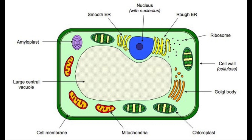First, the plant cell contains chloroplasts. A chloroplast contains green chlorophyll, which absorbs sunlight — this is where photosynthesis happens, which is how plants get their food and energy. That's quite important.